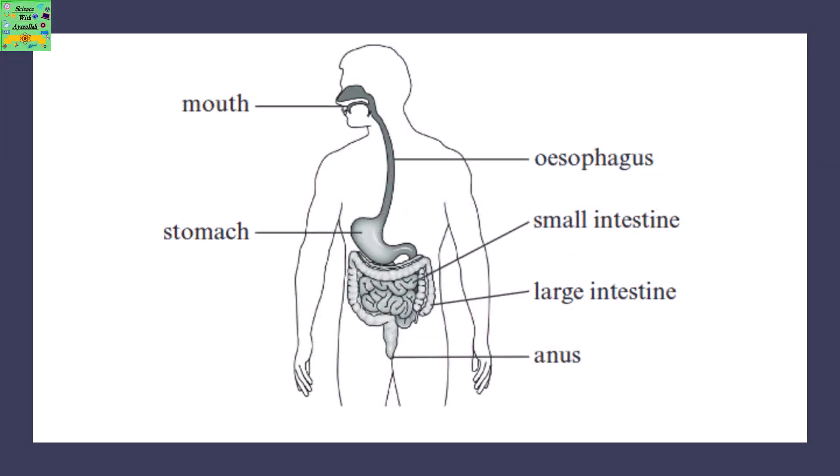The digestive system consists of the mouth, esophagus, the stomach, small intestine, large intestine, and anus.